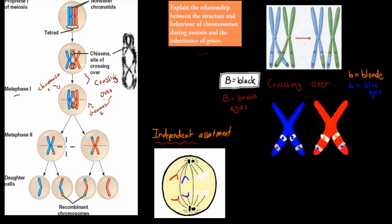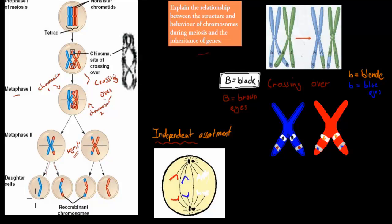Independent assortment is when we actually have them splitting, so you only have half from the original amount. We can also call it segregation. Each sperm — and the same applies to eggs — will only have half of the original amount of the cell, and what kind of chromosomes each sperm gets is pretty much random.